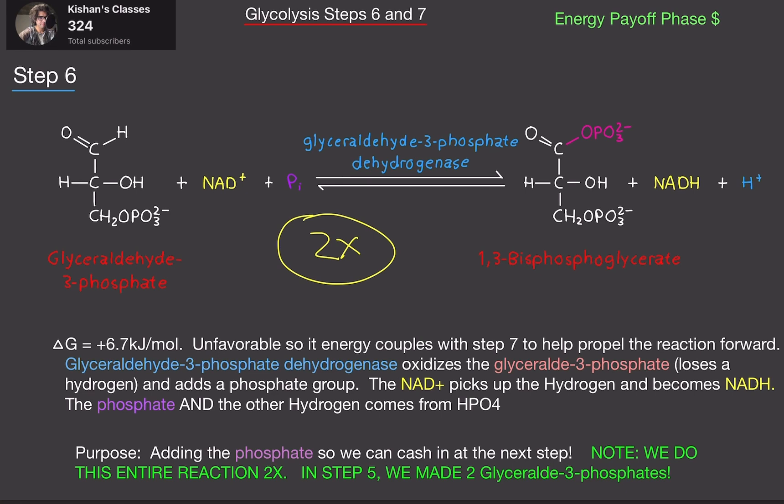So in other words, glyceraldehyde-3-phosphate dehydrogenase is oxidizing glyceraldehyde-3-phosphate. So it basically means we're losing hydrogen and in exchange as a phosphate group right here. The NAD plus picks up the hydrogen and becomes NADH. And the phosphate and the hydrogen both come from hydrogen phosphate, which is this.